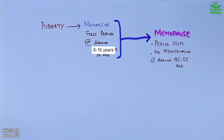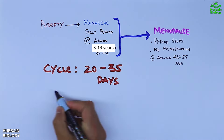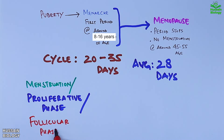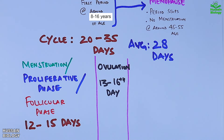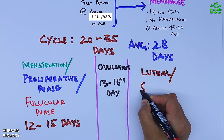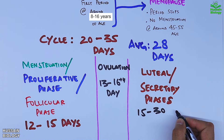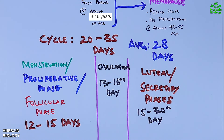The complete cycle ranges from 20 to 35 days, with an average cycle of 28 days. Menstruation, the proliferative phase, and the follicular phase last for the first 12 to 15 days. Ovulation occurs between days 13 to 16, most probably on day 14, but it can vary. The luteal and secretory phase starts from day 15 to day 28, and can extend to day 30 or 31. Ovulation should not be standardized as always occurring on day 14.